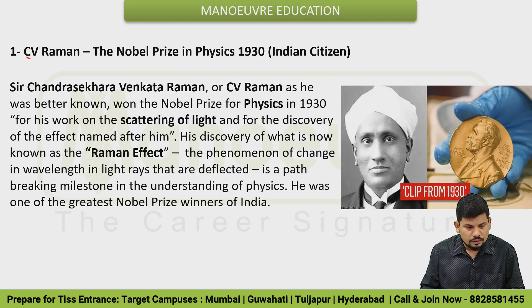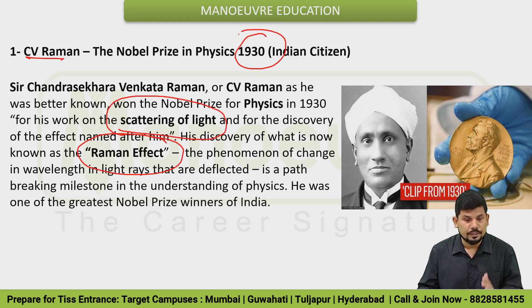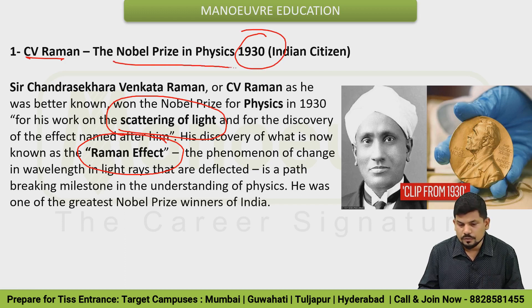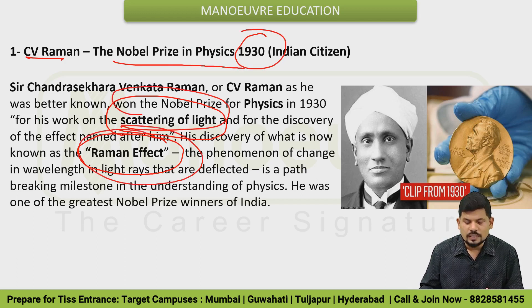CV Raman is also very important. He is well known for the Raman effect — the scattering of light discovery. He is an Indian citizen and received the Nobel Prize in Physics in 1930. Remember the year and the field — for scattering of light — and this research is known as the Raman effect.